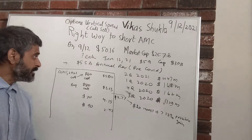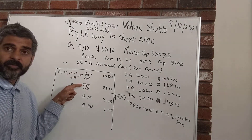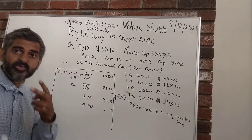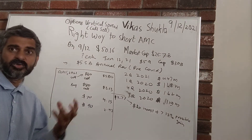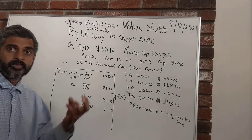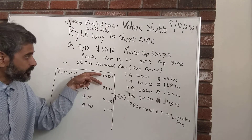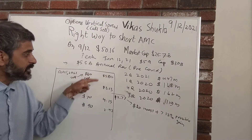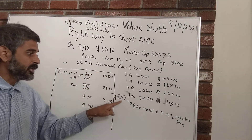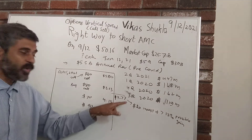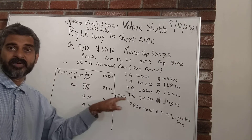My maximum loss is $80 minus $60, which is $20 per share, or $2,000 that I need to put up as collateral with the brokerage. Then I collect the difference: $5.80 minus $3.13 equals $2.67 per share, or $267. So by investing $2,000 in collateral, I am potentially making $267.